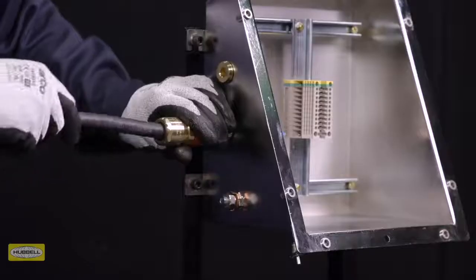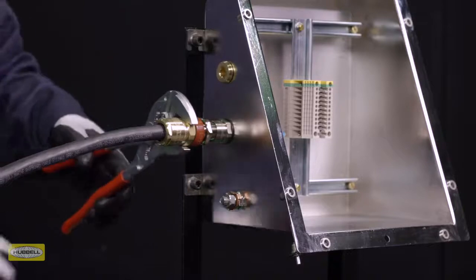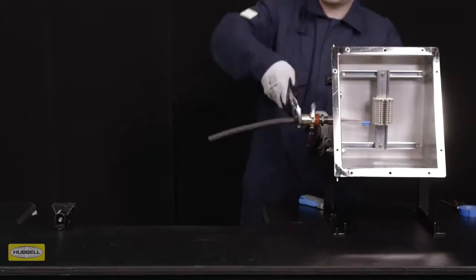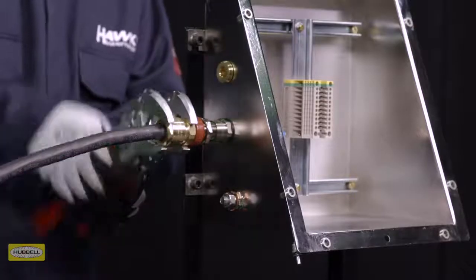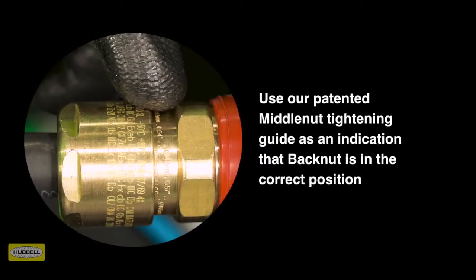Hand-tighten the back nuts until the seal is formed around the cable. Use a wrench or spanner to grip the middle nuts while preventing the middle nut from turning. Use a second wrench to apply one further full turn to the back nuts. Use our patented middle nut tightening guide as an indication that the back nut is in the correct position to suit cable diameter.